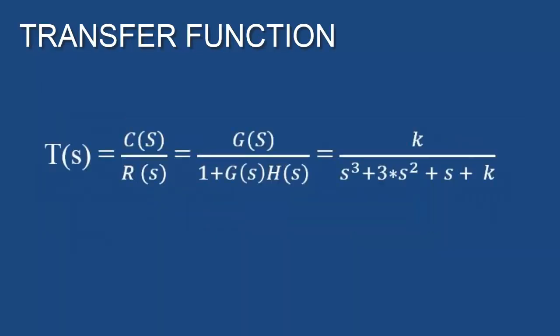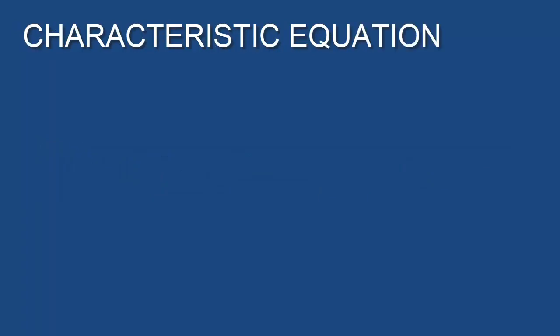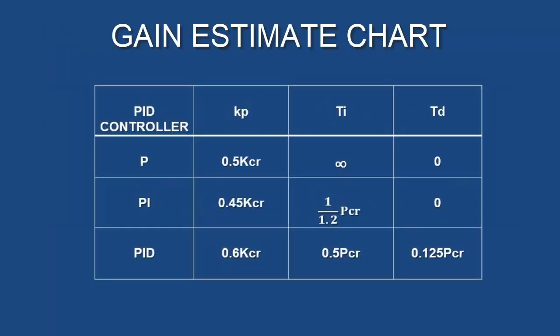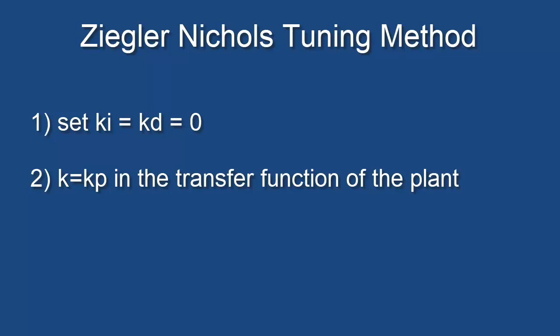To start the process, first we need to define the characteristic equation from the given problem. The denominator polynomial of the transfer function defines the characteristic equation. Then with the help of Routh-Hurwitz, we calculate the value of KCR and PCR - critical value of gain and period of oscillation respectively. Based on these values and this table, evaluate the PID controller parameters and observe the effect on response.